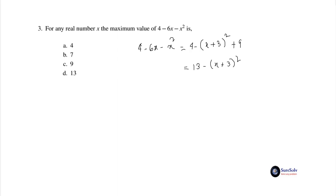In this expression, for any real value of x other than -3, (x + 3)² will always be positive. And on subtraction from 13, the value of the given expression will be less than 13.